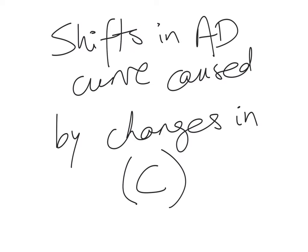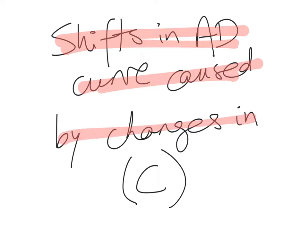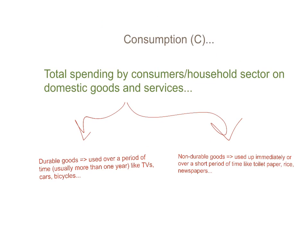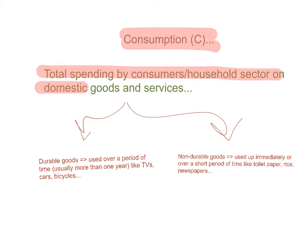What are the things that lead to shifts in the aggregate demand curve that are caused by changes in consumption? Let's first do a quick review of what consumption, or C, is. It's the total spending by consumers or the household sector on domestic goods and services. This includes spending on durable goods that are used over a period of time, and non-durable goods that are used up immediately or over a short period of time.